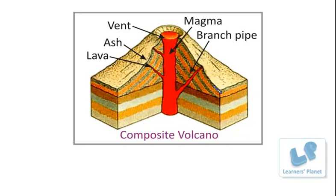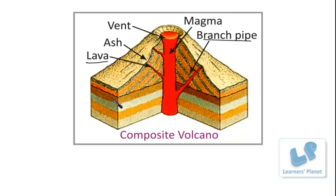The second type is the composite volcano. Composite volcanoes are steep-sided volcanoes composed of many layers of volcanic rocks, usually made from high-viscosity lava, ash and rock debris. Mount Rainier and Mount St. Helens are examples of this type of volcano.